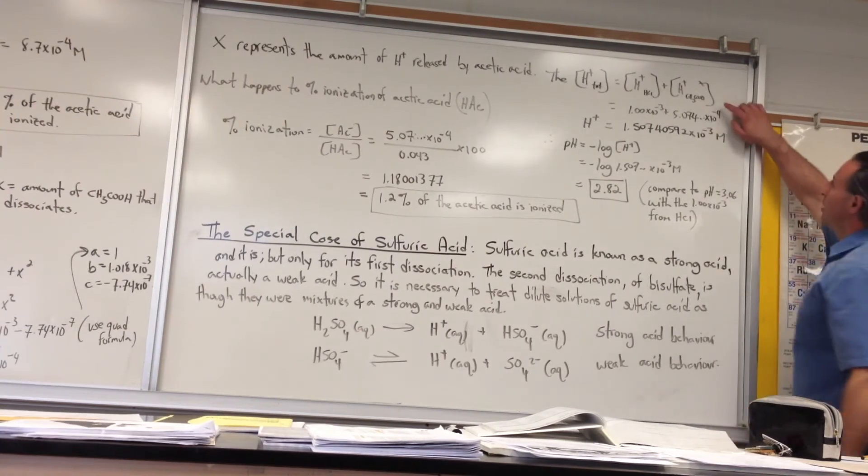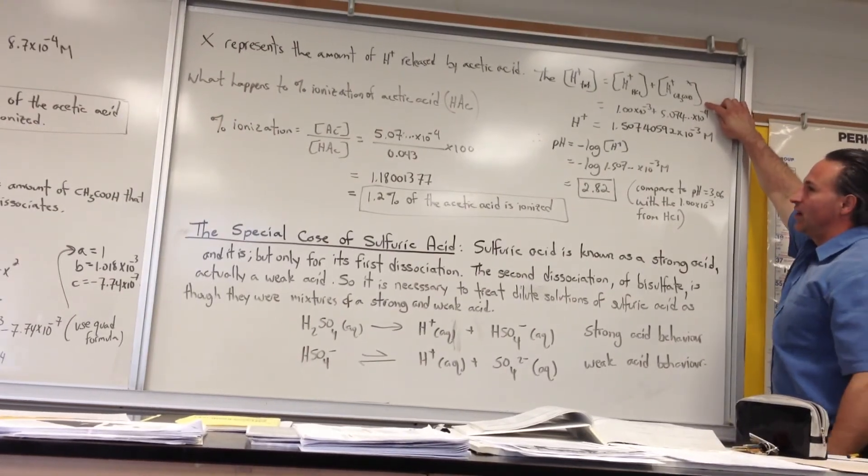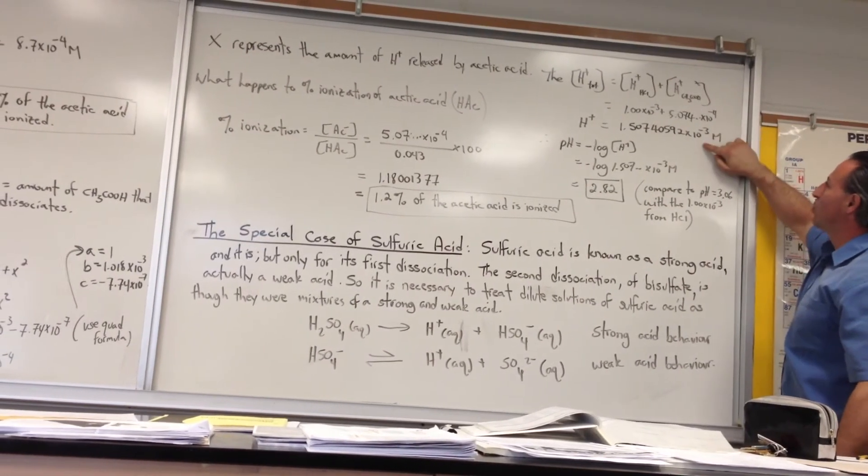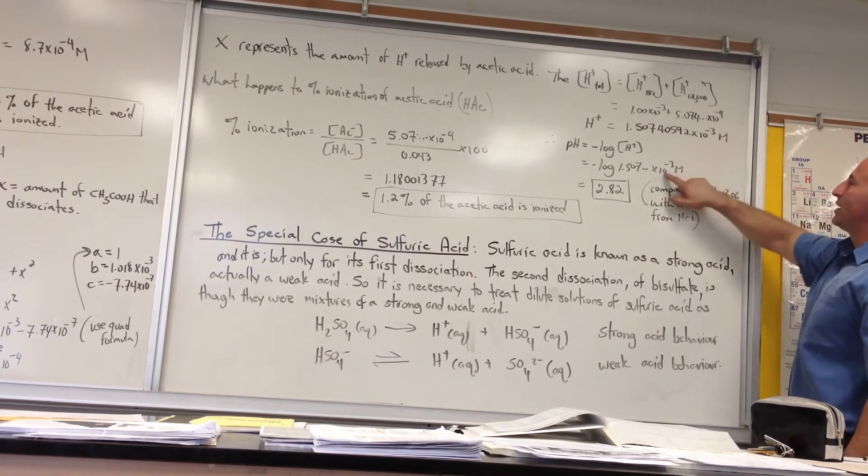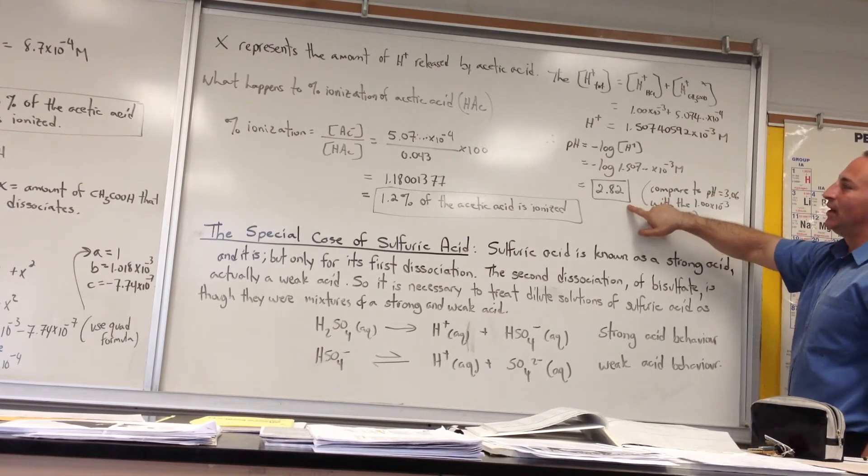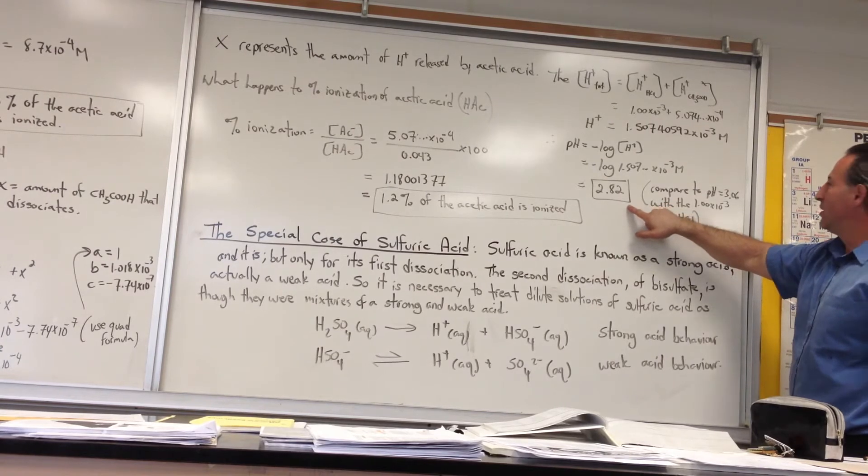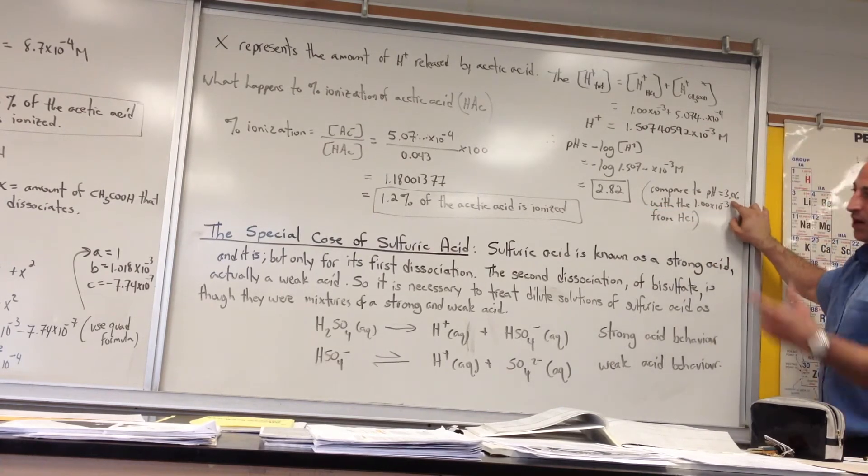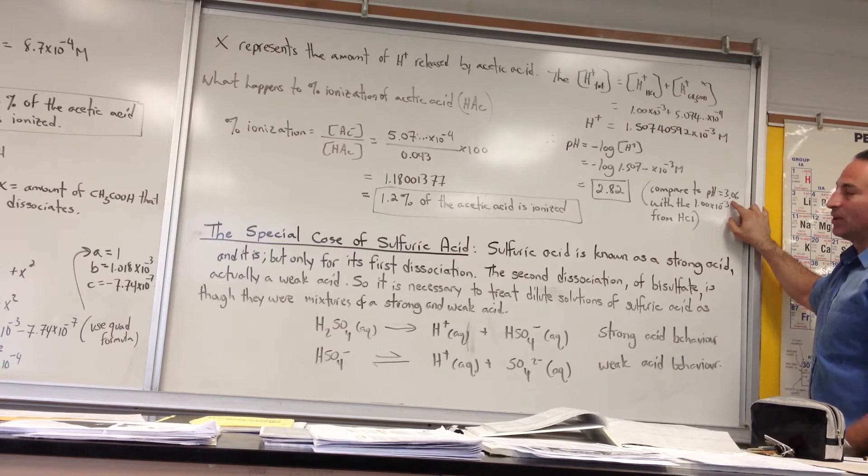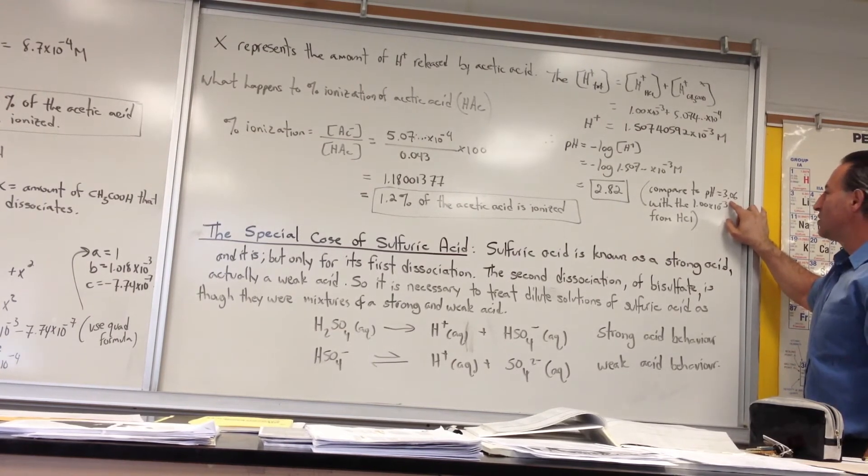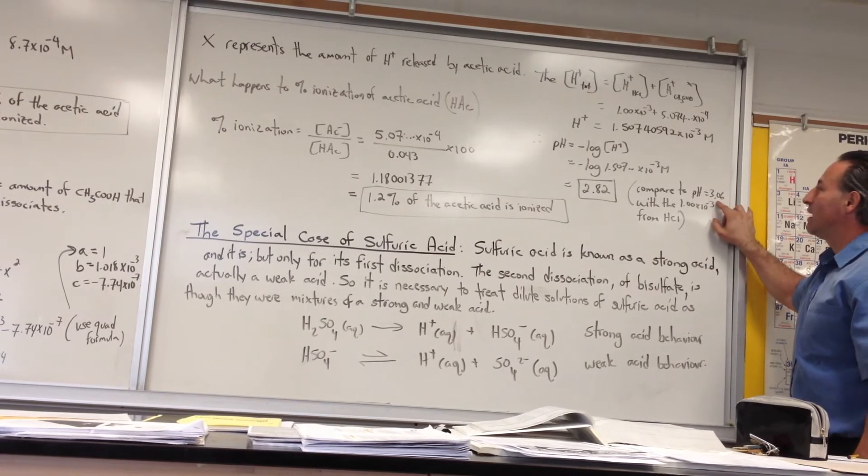The final result is that the total hydrogen ion concentration equals the concentration from hydrochloric acid plus the concentration from further ionization of acetic acid. The total is 1.5×10⁻³ molar. When we take the pH, we get 2.82. Compare that to the 3.06 we got the first time. So the presence of a strong acid lowers the pH in addition to suppressing the ionization.